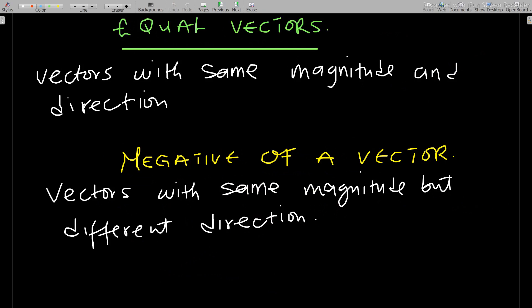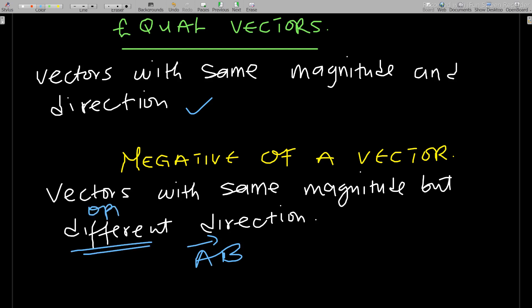Equal vectors are vectors with the same magnitude and direction. They have the same magnitude and direction, not necessarily equal components. The negative of a vector has the same magnitude as the original vector but the opposite direction.